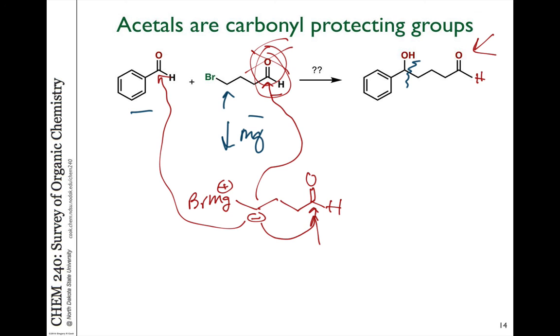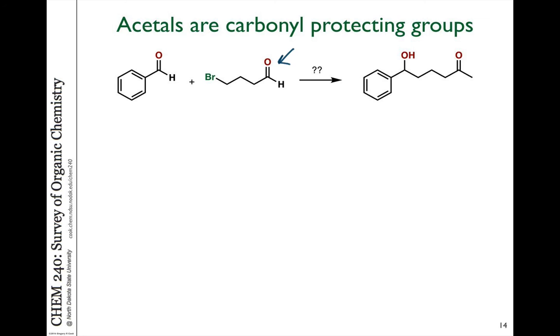So how do we do that? Well, we can make an acetal to protect this molecule first so that it doesn't react with the reactive Grignard reagent. If we take something like methanol in an acid catalyst and we use two equivalents of the methanol, we can generate an acetal which looks like this. Now, since this is SP3 hybridized, it's not going to be reactive to Grignard reagent. We can convert the bromine into our magnesium compound and then do our reaction with the aldehyde.